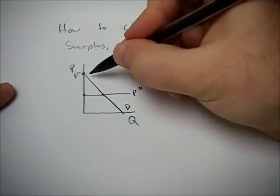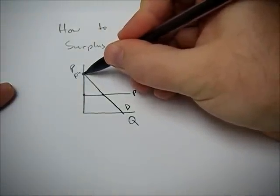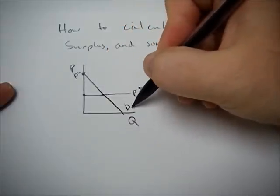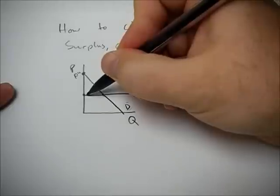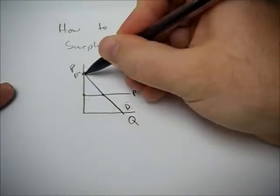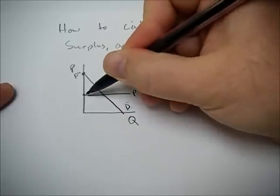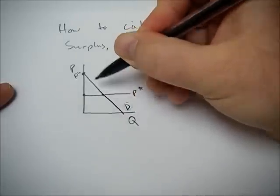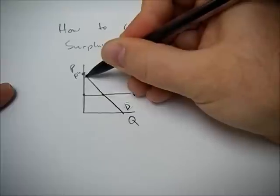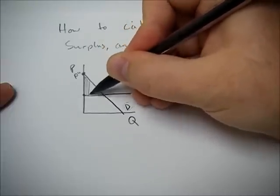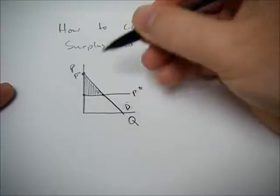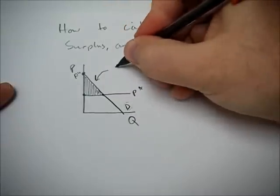So consumer surplus is the difference between what you're willing to pay, which is how we construct this demand curve, and what you actually have to pay. So for each of these consumers, they're willing to pay a lot more than the actual price they have to pay. So it's that area between the demand curve and the price paid that's going to be our consumer surplus.